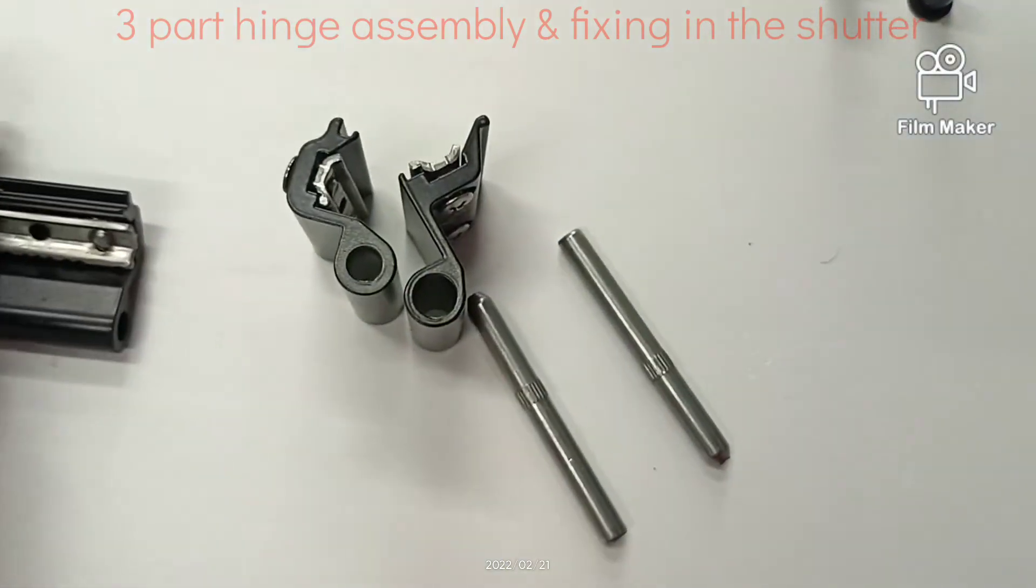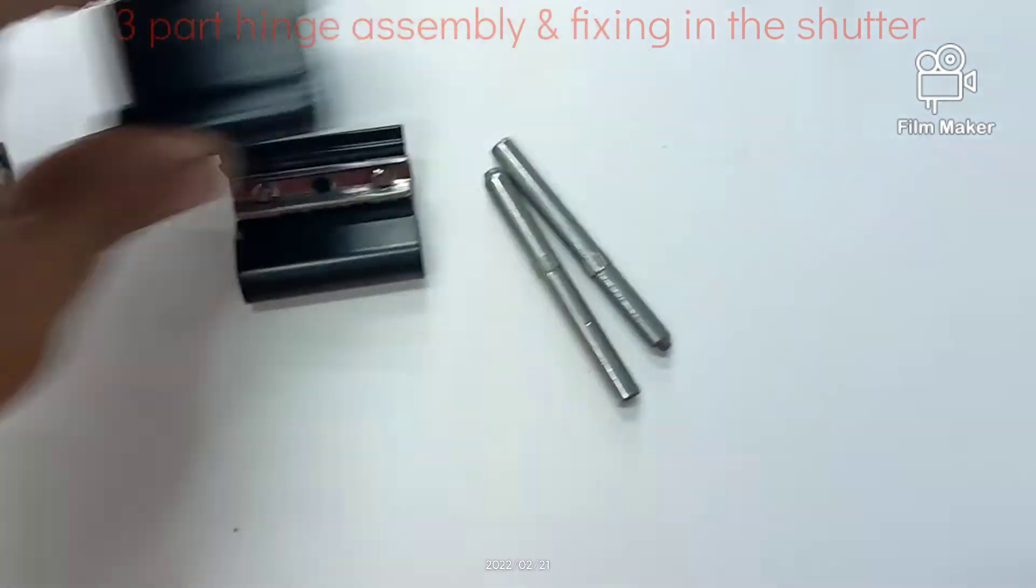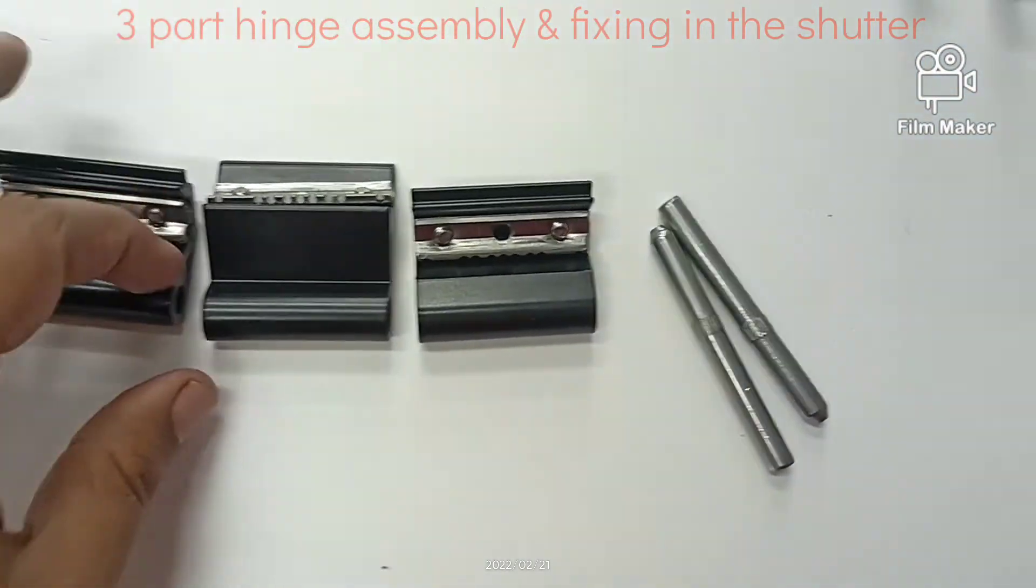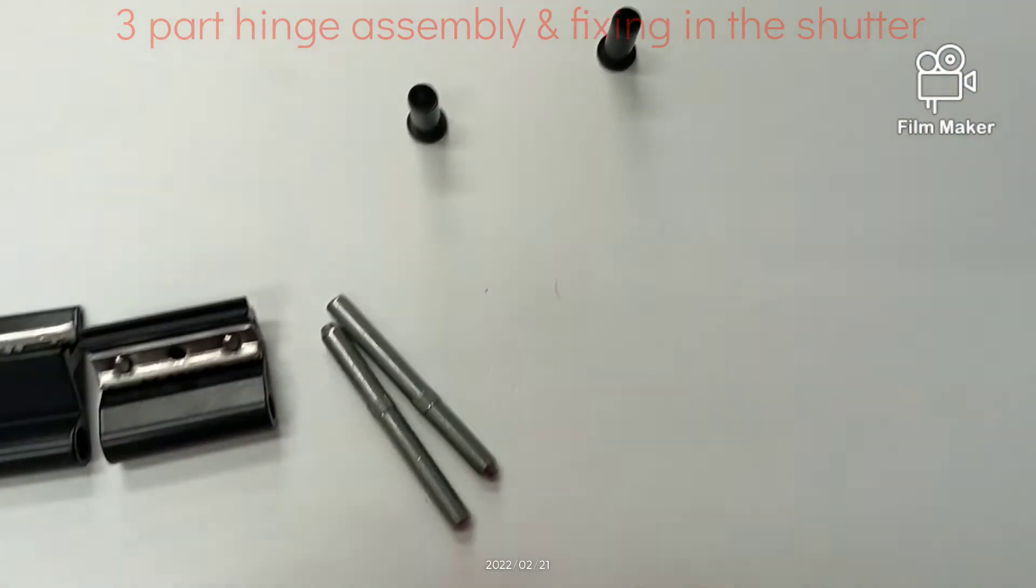It will be assembled like this: these two parts will come here, this part in the opposite way will come in the center with the two bushes supplied and the rod.